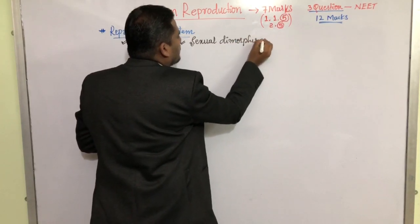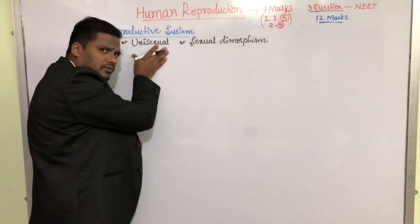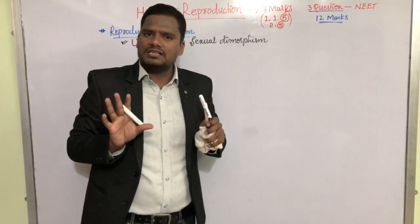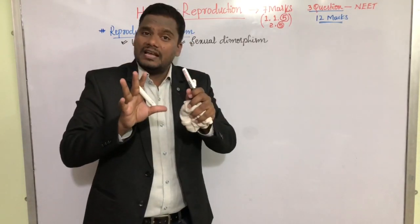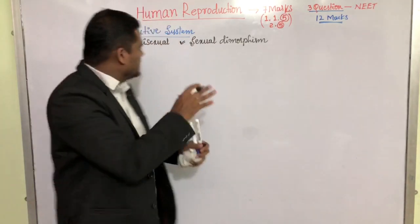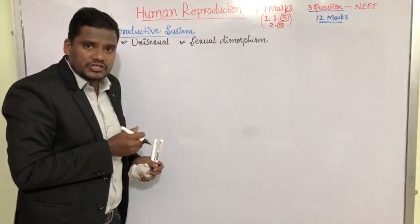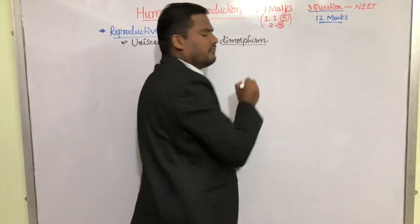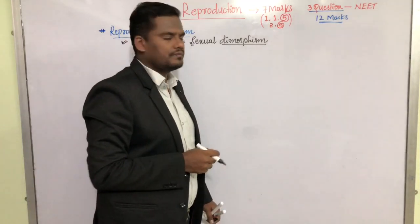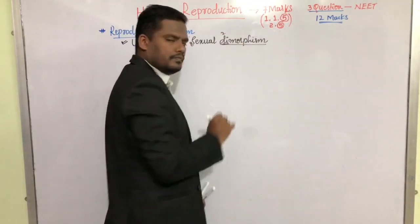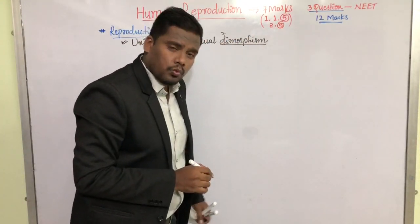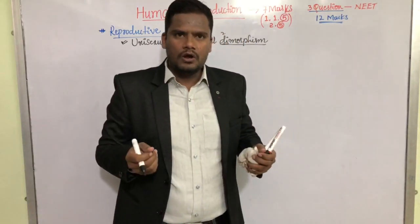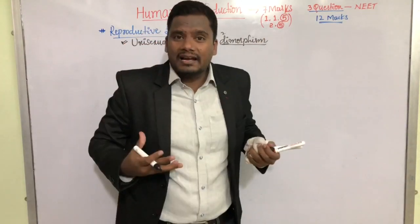Human beings are unisexual and they show sexual dimorphism. The word dimorphism is a combination of two words: 'di' meaning two, and 'morphism' referring to morphology — the study of external characteristic features of any individual. Morphology means the study of external visible characters of an individual.